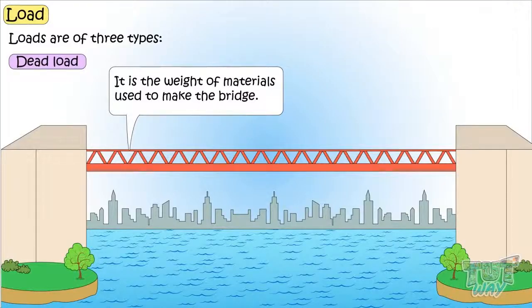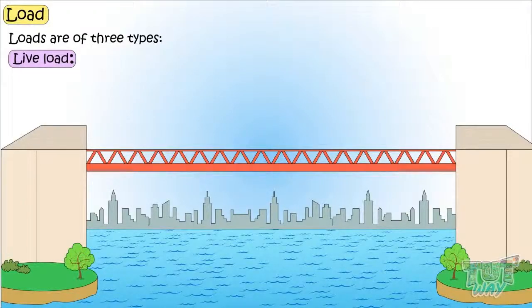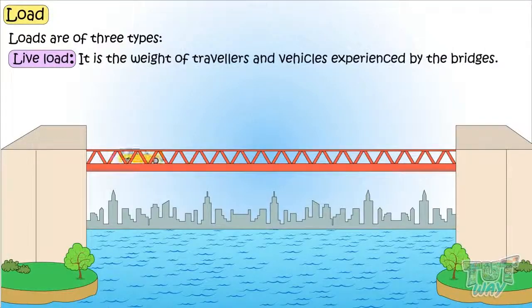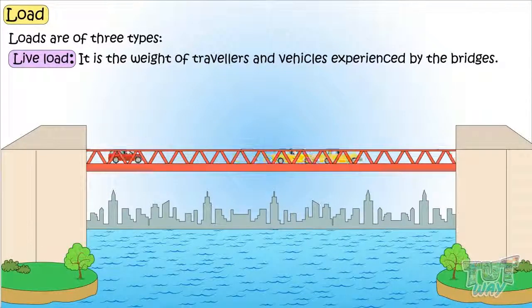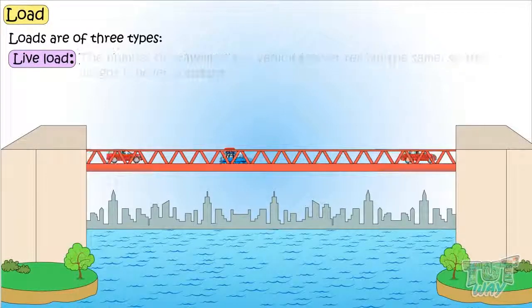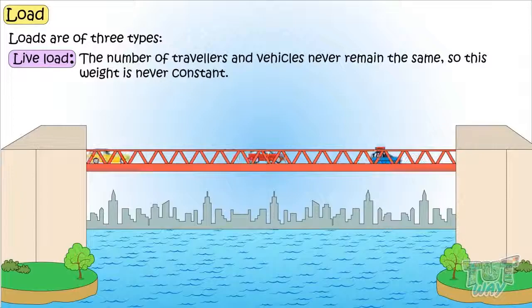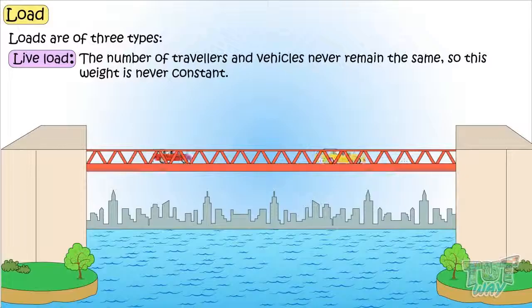Next is the live load. It is the additional weight experienced by the structure, like the weight of travelers and vehicles experienced by the bridges. This type of weight changes over time. The number of travelers and vehicles never remains the same, so this weight is never constant.